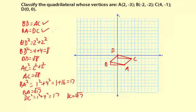So check. BA equals DC. So that means we have a parallelogram.